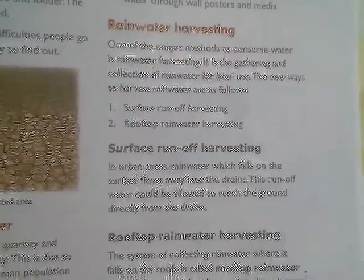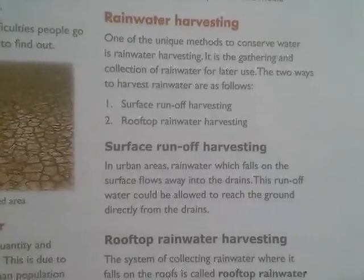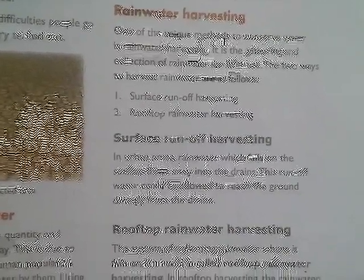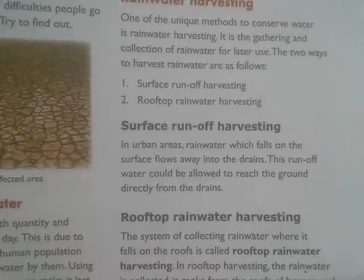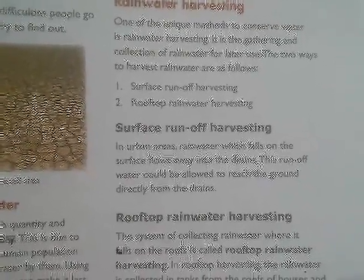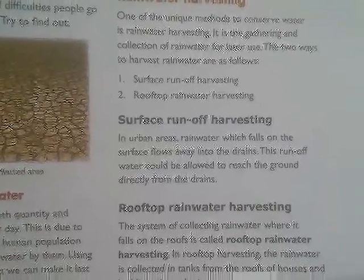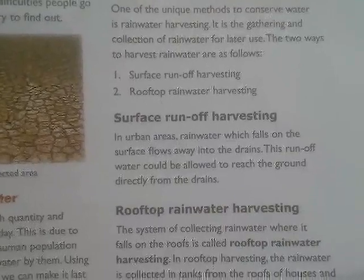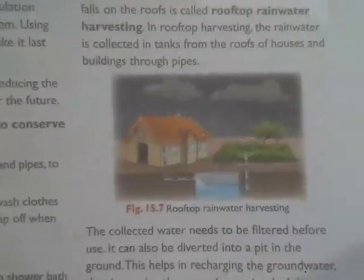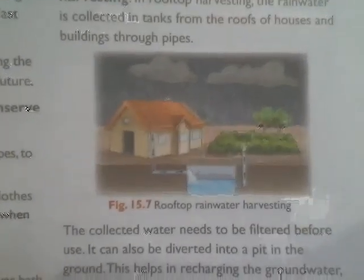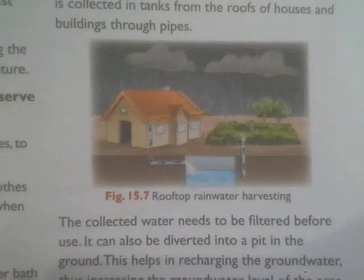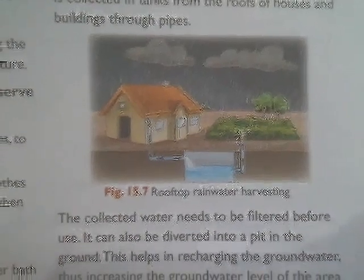Another very commonly used technique is rainwater harvesting. Two types of rainwater harvesting are surface runoff harvesting and rooftop rainwater harvesting. In urban areas, during the rainy season, drains are made that run toward the ground, so that rainwater is collected through drain pipes and stored underground — this increases the groundwater level. For rooftop harvesting, as shown in the diagram, during the monsoon season water is collected through drain pipes into a pit or tank below the ground, and that stored water can be used for various purposes such as agriculture.